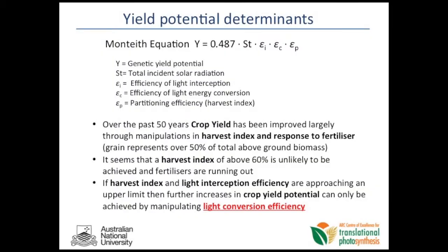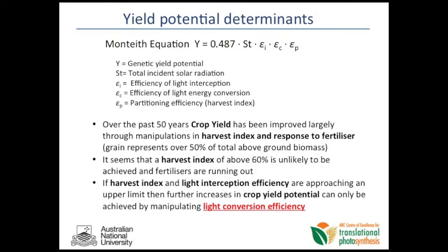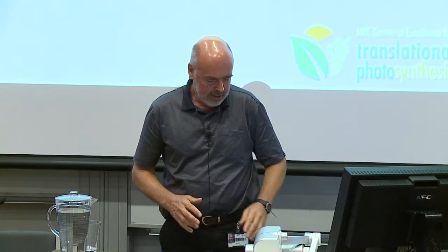So what are the yield potential determinants? This is essentially the Monteith equation, which can be broken down as: yield is proportional to the solar energy incident on the crop, times the efficiency with which light is intercepted by the crop, times the efficiency with which that light is converted into CO2 capture, and then a partitioning coefficient — the extent to which carbon is partitioned towards yield products. Over the past 50 years yield has been increased by optimising harvest index in response to fertiliser, and it seems that harvest index above 60% is unlikely and fertilisers are running out. That leads to the concept that further increases in crop yield potential can probably only be achieved by increased light conversion efficiency — and that's photosynthesis.